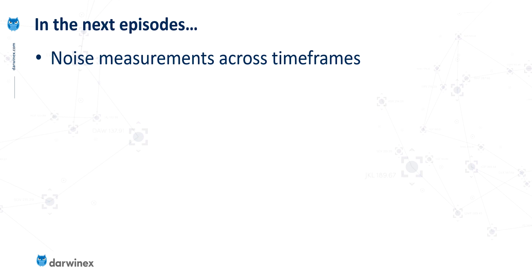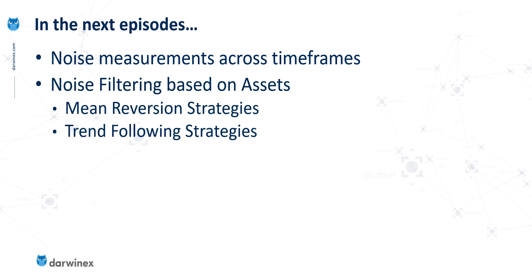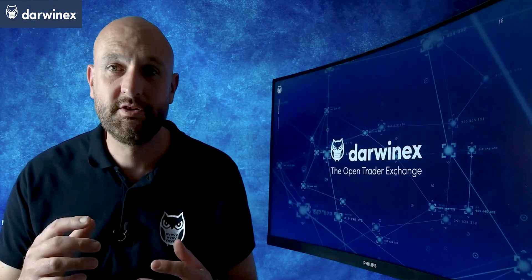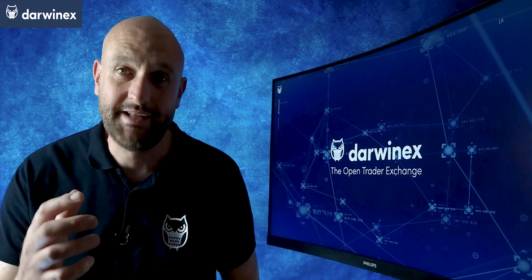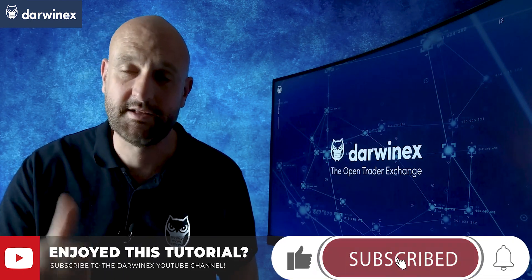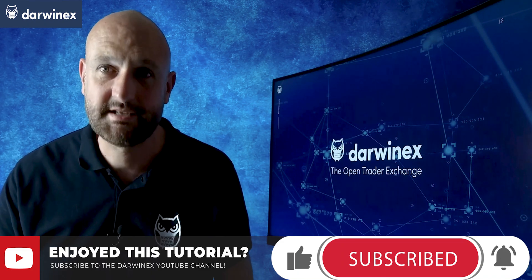Following this timeframe analysis, we're going to move on in a future episode to look at the concept of noise filtering — firstly based on assets. I'll be looking at how asset selection can directly impact the performance of these two types of strategy: trend following and mean reversion. And then we'll do exactly the same for timeframes. So it won't be long before we can start to look directly at the potential impact on performance of these trading strategies. If you're getting value from these videos, please do remember to give me a like. Until next time, trade safe.